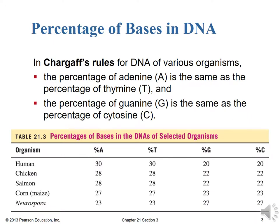Let's talk about some understanding of DNA. First of all, the percentage of bases in DNA — according to Chargaff's rules for DNA of various organisms — the percentage of adenine A is the same as the percentage of thymine T, and the percentage of guanine G is the same as the percentage of cytosine C, although they're not the same as each other. Looking at the human organism, we see that humans are about 30% adenine, 30% thymine, 20% guanine, and 20% cytosine in our DNA. We sum to 100% total, but we're slightly richer in adenine and thymine and slightly less rich in guanine and cytosine.